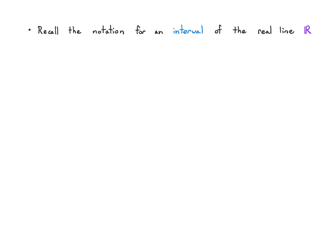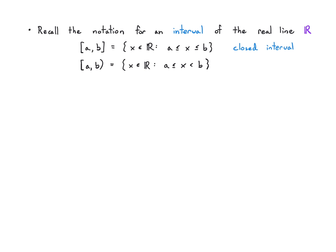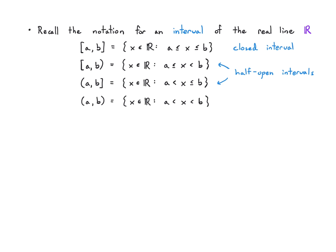Let's recall the notation for intervals on the real line, written with this R with a double line through it. There are four intervals: from A to B with square brackets gives real numbers between A and B inclusive — a closed interval. A curvy parenthesis on the right means I don't include B — a strict inequality on the right. A curvy parenthesis on the left means I don't include A but do include B. These are half open intervals. And curvy parentheses on both sides means I don't include either endpoint — that is an open interval.